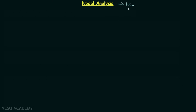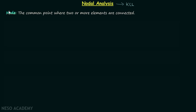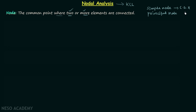We will understand how it is based on KCL, but first we will quickly revise what is a node. A node is the common point where two or more elements are connected. When two elements are connected, the node is known as a simple node, and when more than two elements are connected, the node is known as a principal node.